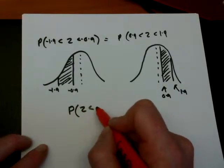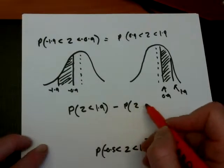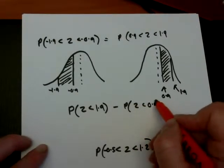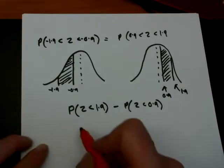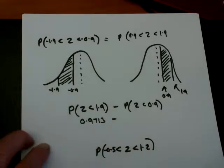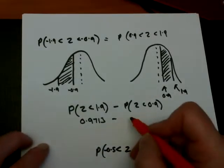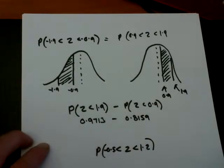The probability that z is less than 1.9 minus the probability that z is less than 0.9. So we quickly look those values up in the table at 0.9713 minus 0.8159 and finish that off with the calculator. That's your method.